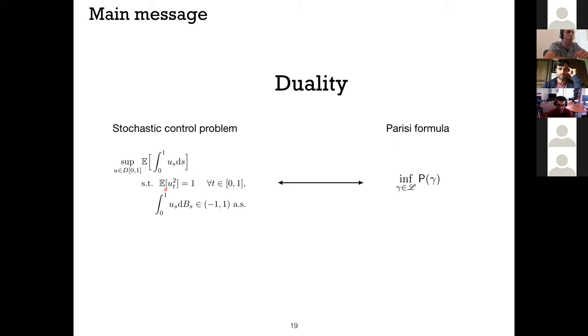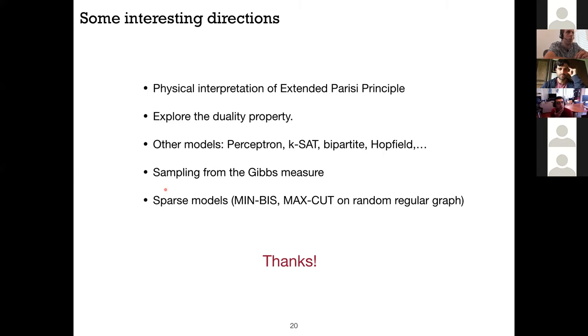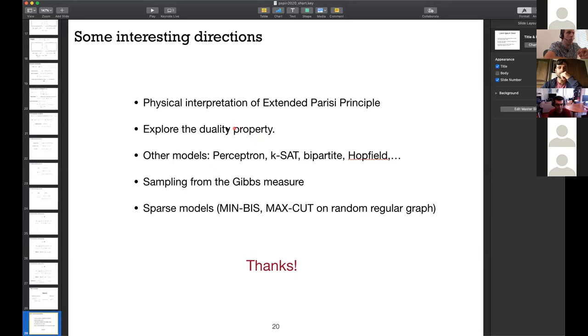Okay, so let me just conclude here. Interesting directions here are on physical interpretation of this extended Parisi variational principle, and we don't have that yet. This is just what is achieved by the algorithm and we don't know what that is in terms of the actual Gibbs measure. And we would like to explore this duality property. And then other models would be the perceptron case, stats bipartite models, etc. Sampling would be an interesting idea, and then we can try to extend this idea to sparse models. And that's all. All right, thanks Ahmed.